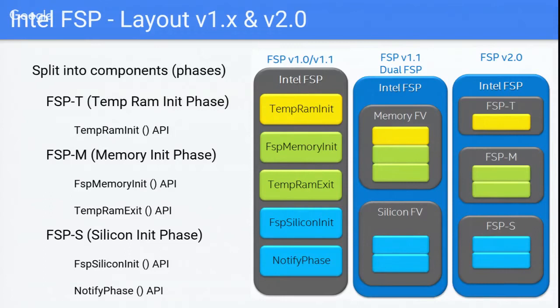Essentially, an FSP 2.0 compliant image is technically three binaries padded together. We still distribute as a single binary, but there's a Python script in open source to split into three different binaries, giving flexibility: TemprimPhase can run in SRAM, memory code in cache SRAM, and silicon code from there. You can rebase at different addresses in your memory map—you have that flexibility with 2.0.